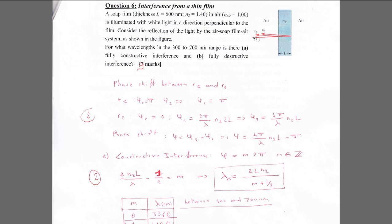This is a standard thin film problem. We find the phase shifts for each ray. For ray 1, reflecting at the air-to-film interface: since N2 is greater than n_air, there is a phase shift of pi upon reflection. There is no phase shift related to optical path difference since the ray just reflects, so the total phase shift for ray 1 is pi.